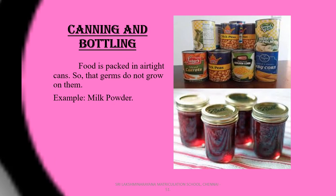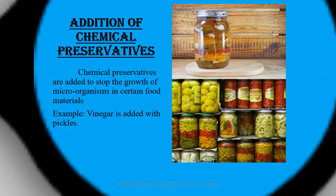Canning and bottling: in this method, we pack the food in airtight containers or cans so that germs will not grow in them. Example includes milk powder. Addition of chemical preservatives: nowadays, chemical preservatives are added to food items so that they can stop the growth of microorganisms in the food. For example, vinegar is added in pickles.